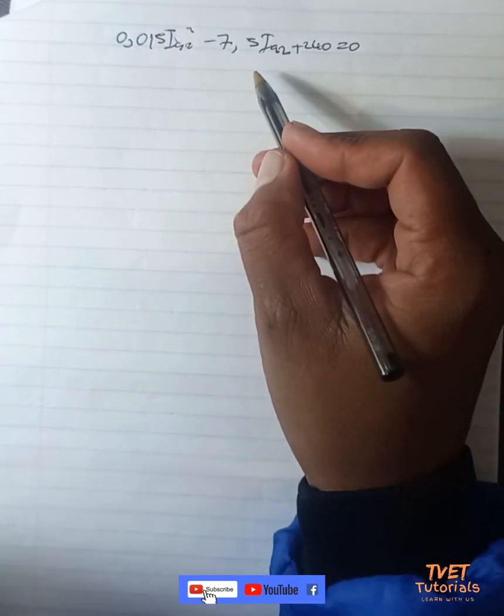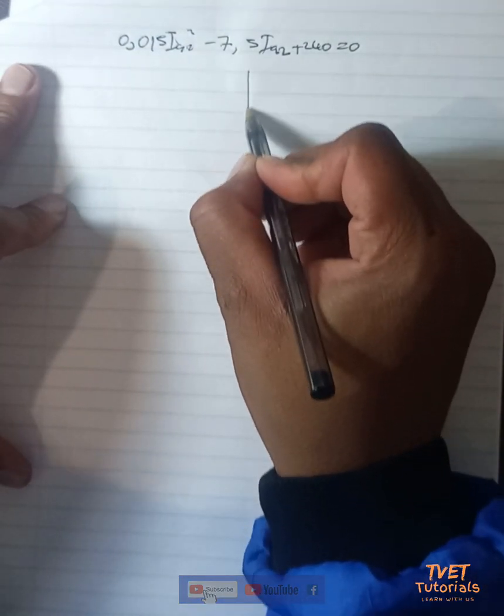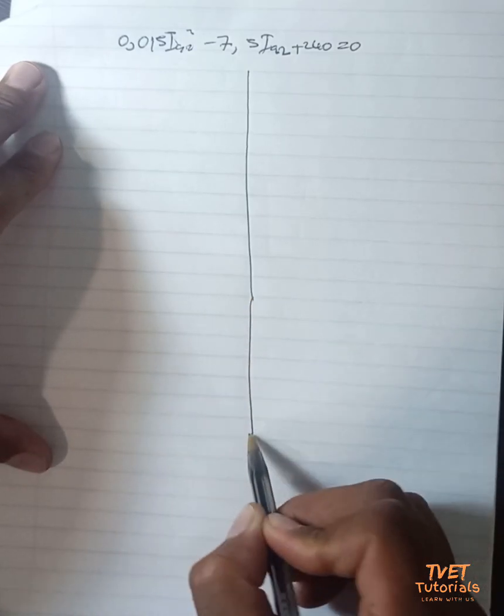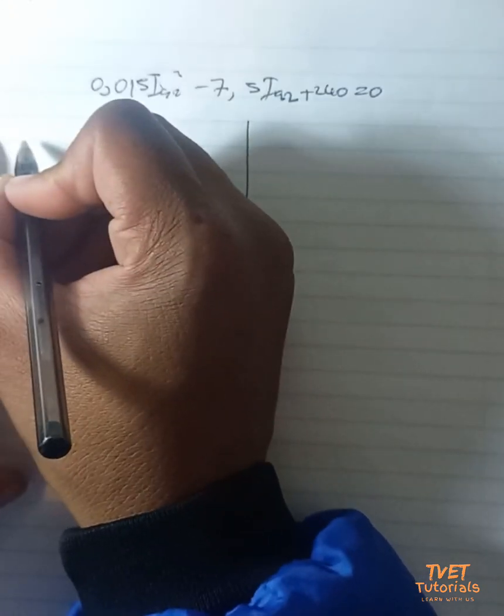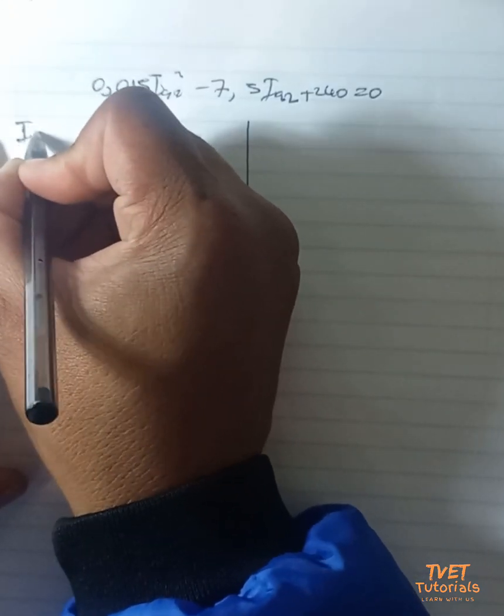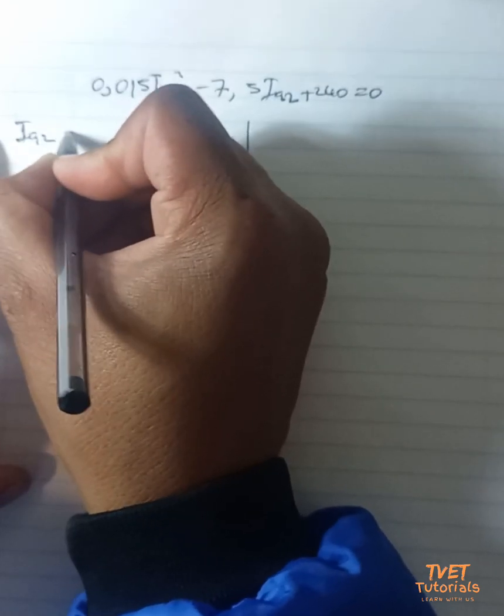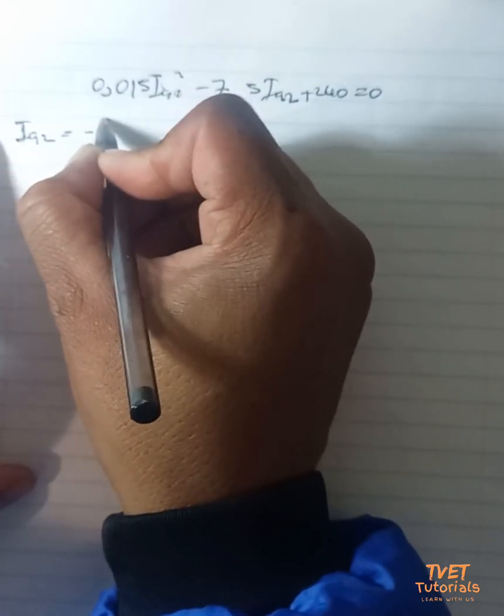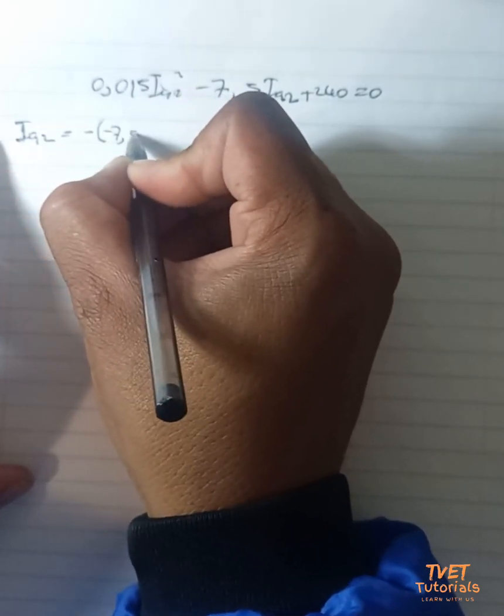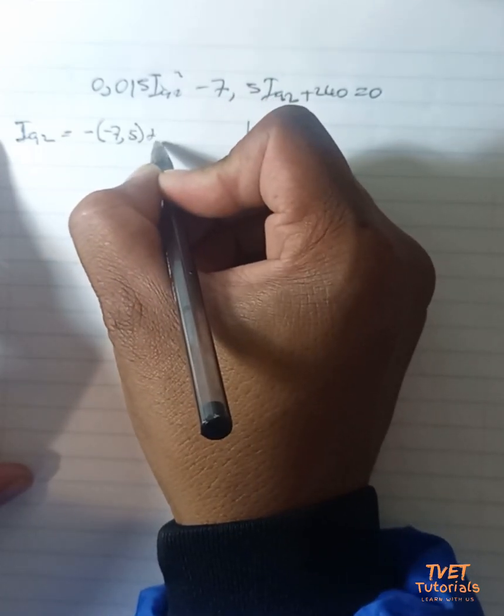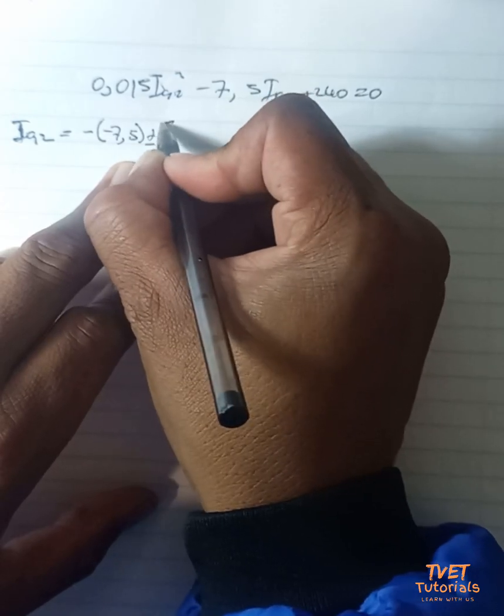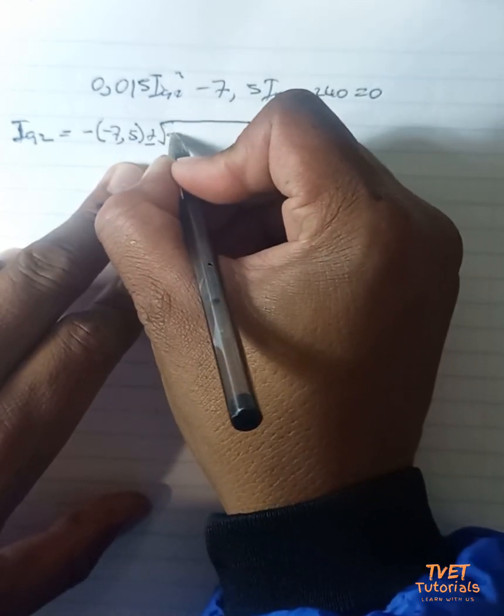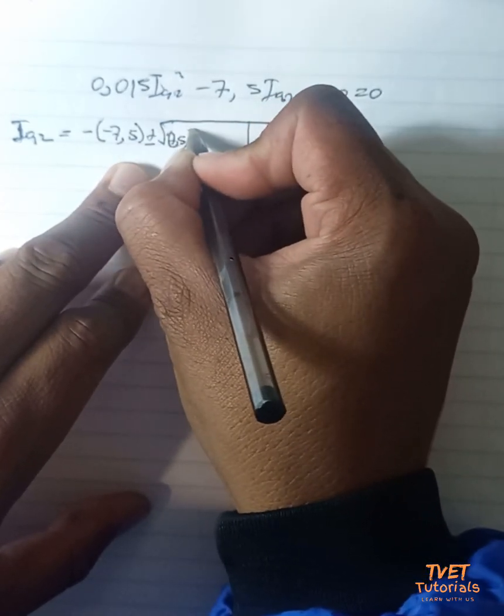We can apply the quadratic formula in solving this question. So if we apply the quadratic formula, we remember it says I_a2 is equal to minus minus 7.5 plus or minus the square root of 7.5 squared